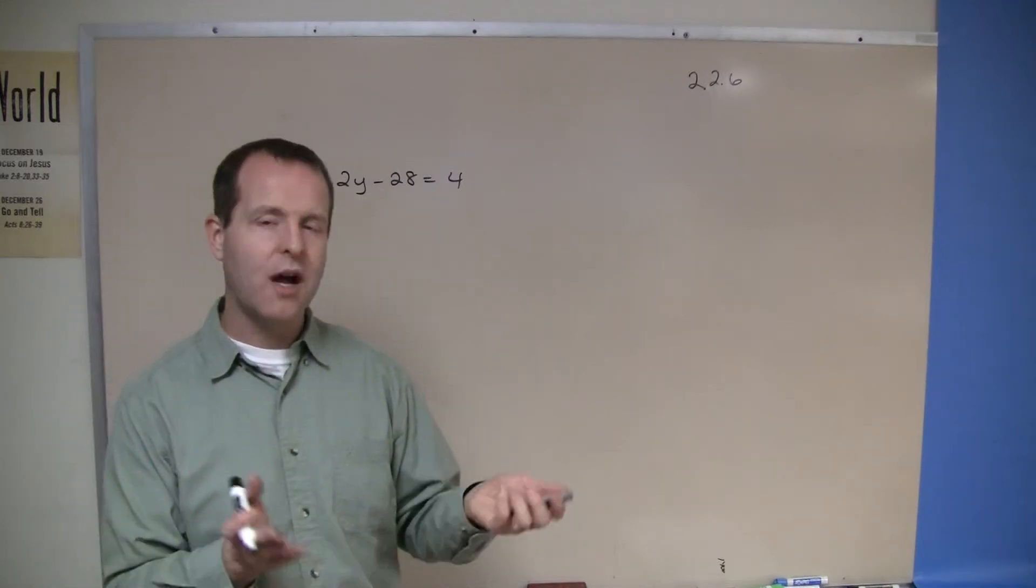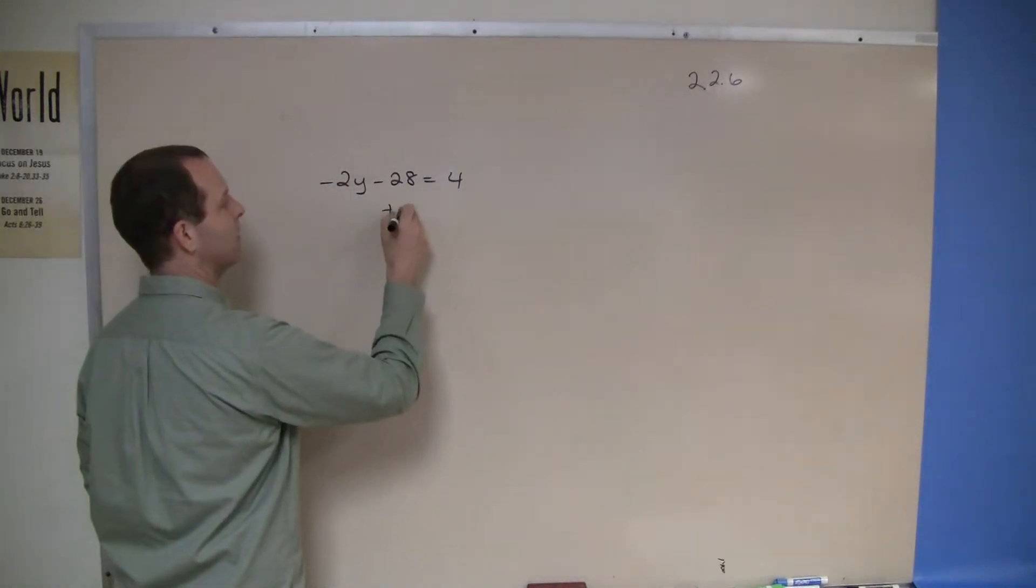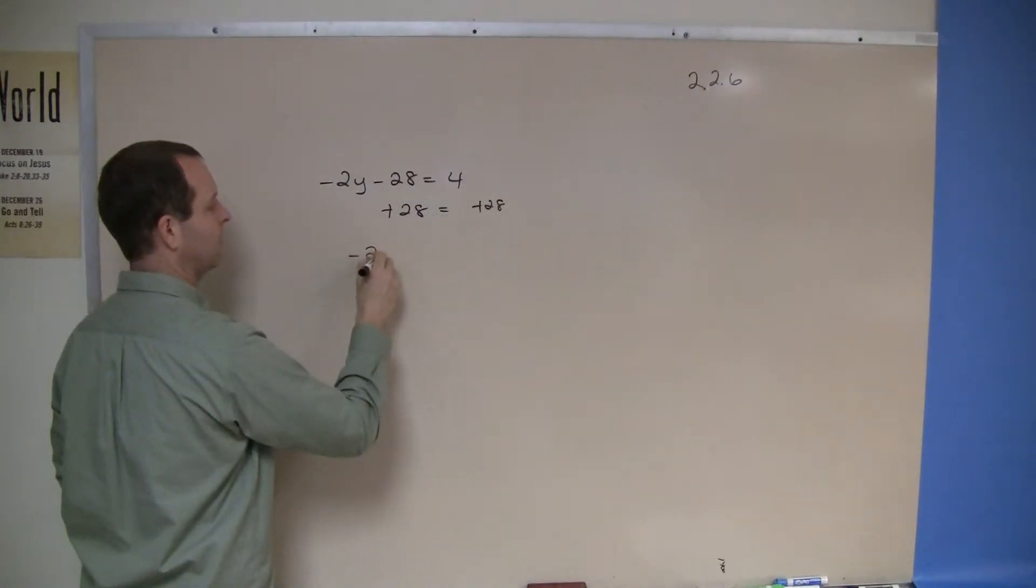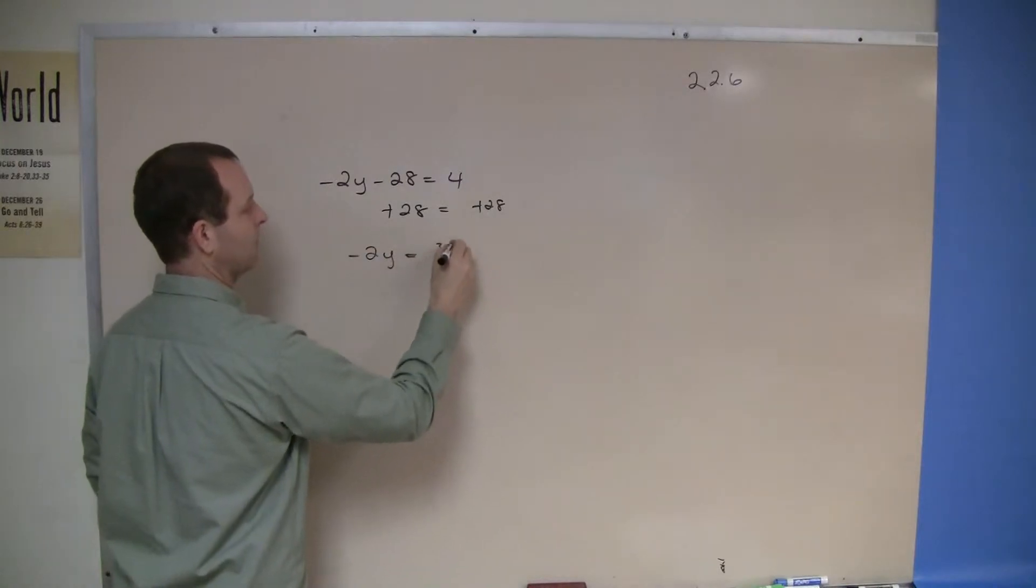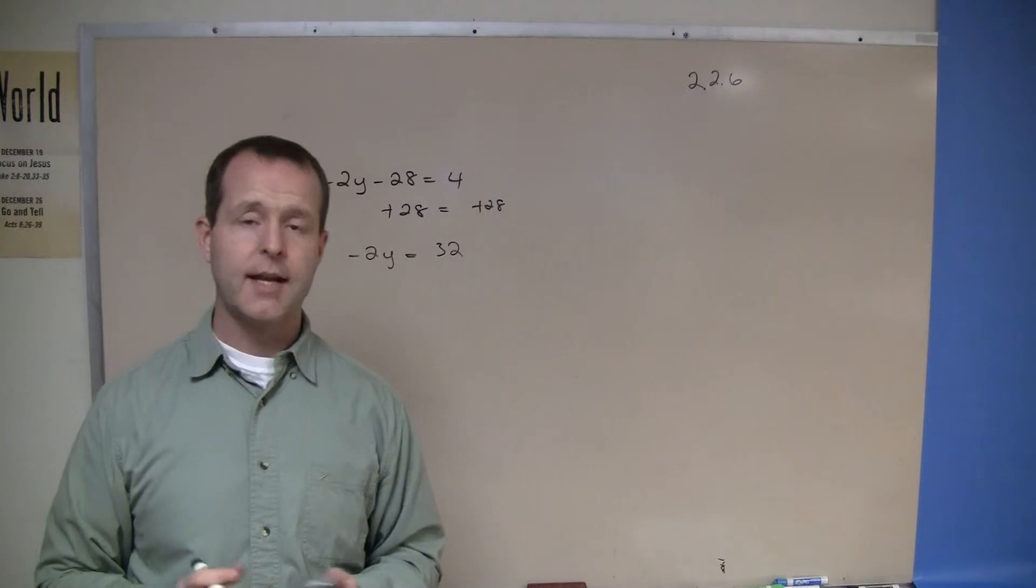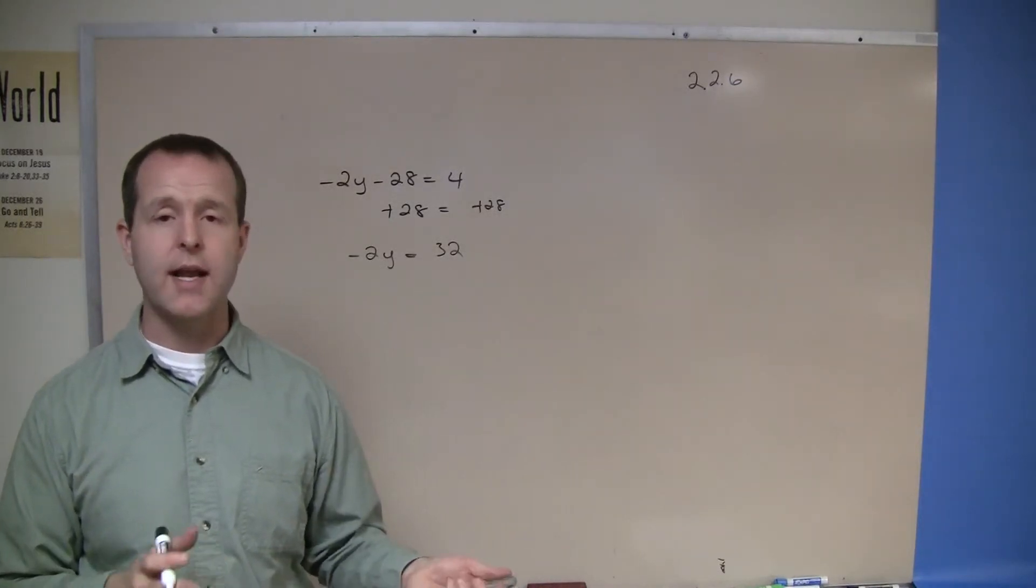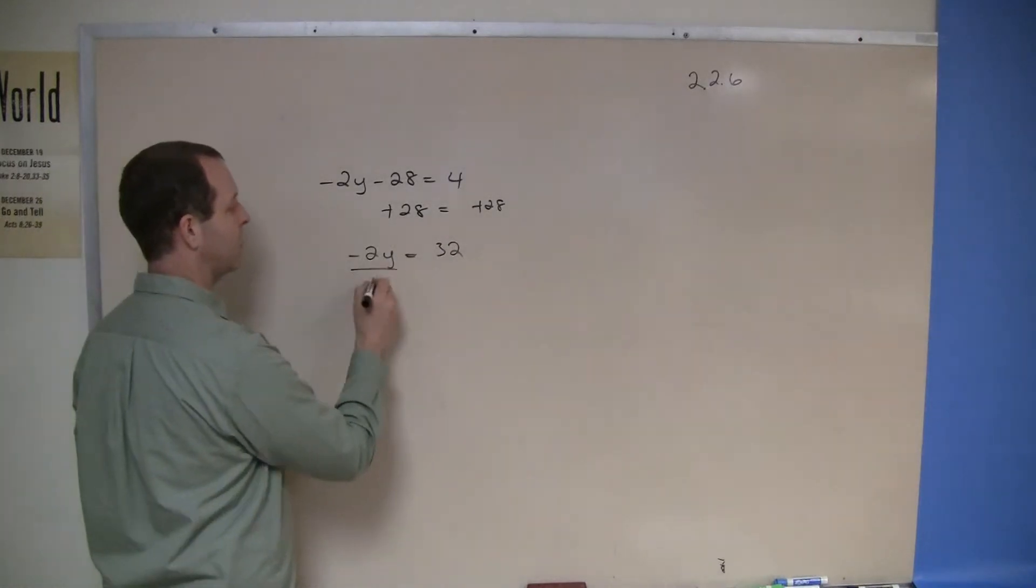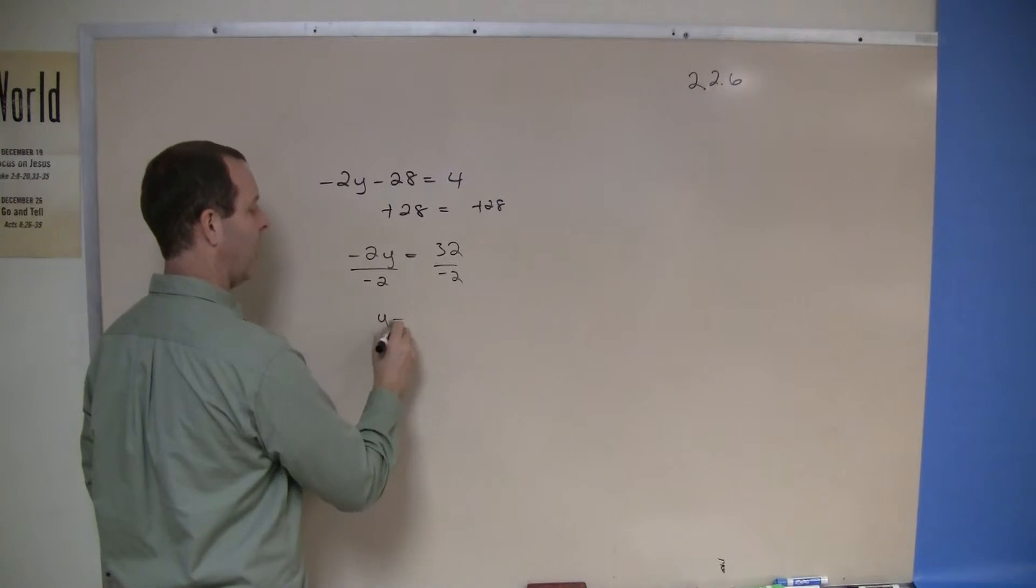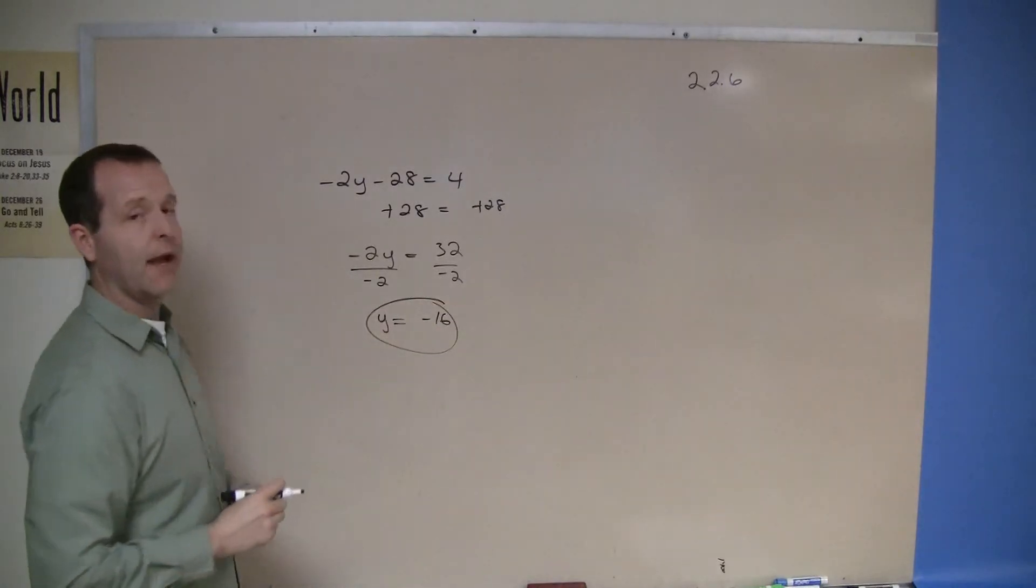As long as I obey the rules, I'll eventually get there. So I'm going to add 28 to both sides first. So negative 2y equals 32. Now I want to divide both sides in such a way that it eliminates any constants in front of that y. So let's divide both sides by negative 2. So then y equals negative 16. And there's my solution.